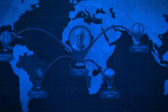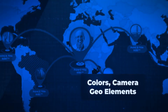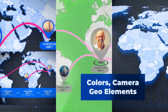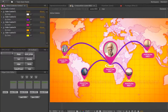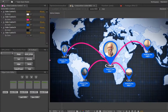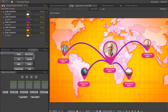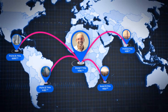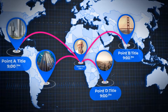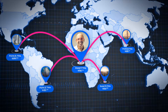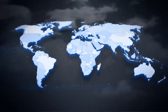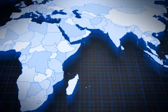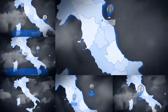Working with the template is easy because the project contains three types of settings. The first type allows you to customize the colors of the map individually for your design. The second type adjusts the position of geo marks and routes on the map. The third type controls camera movement over the map, so you can zoom closer to any point with ease.